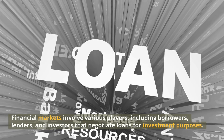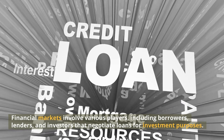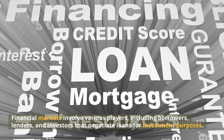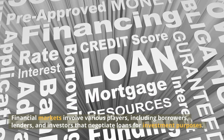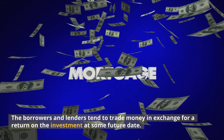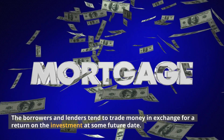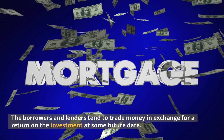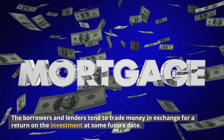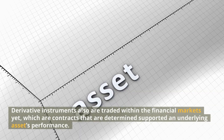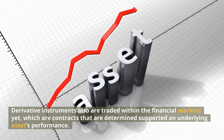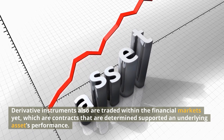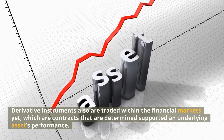Understanding financial systems: financial markets involve various players, including borrowers, lenders, and investors that negotiate loans for investment purposes. The borrowers and lenders tend to trade money in exchange for a return on the investment at some future date. Derivative instruments are also traded within the financial markets, which are contracts determined based on an underlying asset's performance.